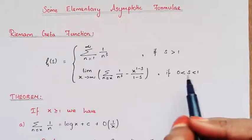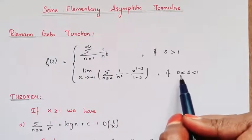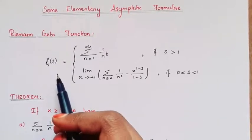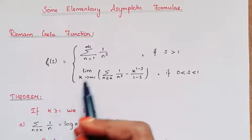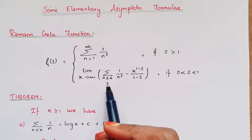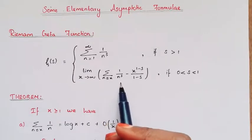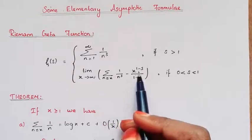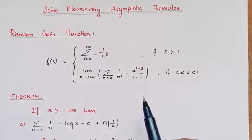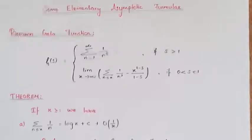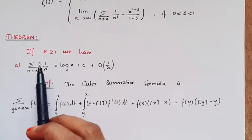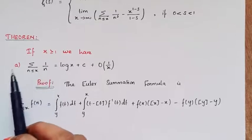If s lies between 0 and 1, then zeta of s is equal to the limit as x tends to infinity of the sum over n less than or equal to x of 1 by n power s, minus x power 1 minus s by 1 minus s. Next, the theorem. In this theorem we have four subdivisions.